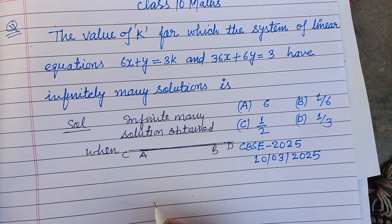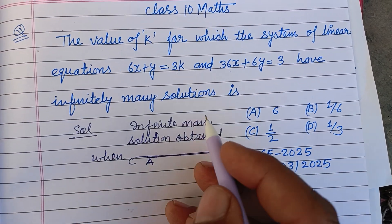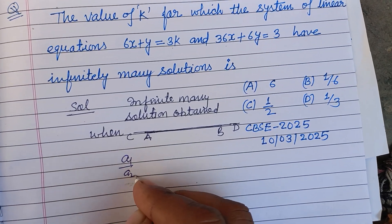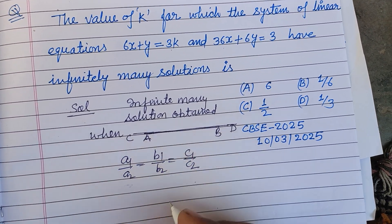Then they touch at an infinite number of points, which means a₁/a₂ = b₁/b₂ = c₁/c₂.